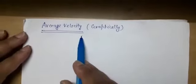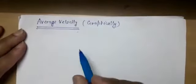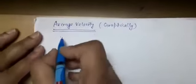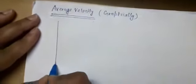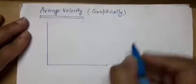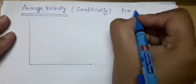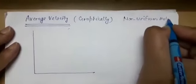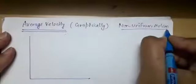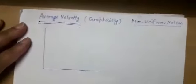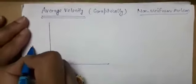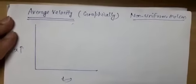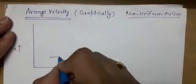Average velocity of an object is equal to the ratio of change in position to the time taken. This concept is specifically for non-uniform motion — the concept of average velocity exists only for non-uniform motion. When we plot a position-time graph for non-uniform motion, the graph will not be a straight line; it will be a curve.